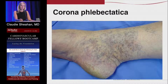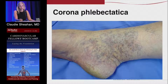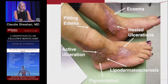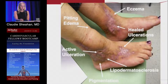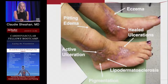This is corona phlebectatica. This is a sign you will see in patients, and it's pathognomonic for venous hypertension of whatever cause — whether it's deep venous insufficiency, superficial, or perforator venous insufficiency. This next picture shows a patient with very advanced venous disease. You can see all types of findings here: eczema, healed ulcerations, lipodermatosclerosis, active ulceration, and pitting edema.